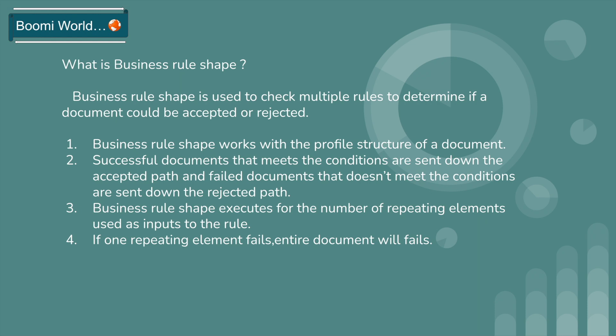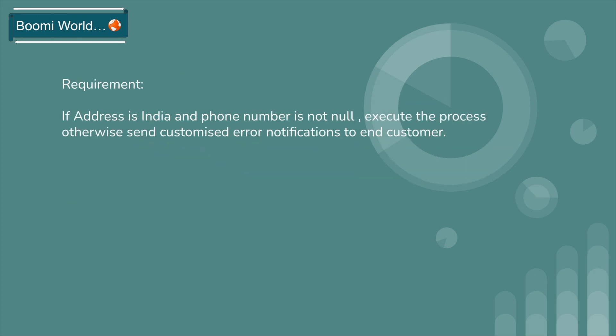Successful documents that meet the condition are sent down the accepted path, and failed documents that do not meet the conditions are sent down the rejected path. The Business Rule Shape executes for the number of repeating elements used as inputs to the rule, so if one repeating element fails the entire document will fail. It's better to use a Data Process Shape before the Business Rule Shape to execute all documents individually.